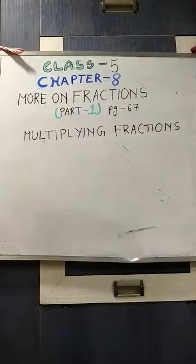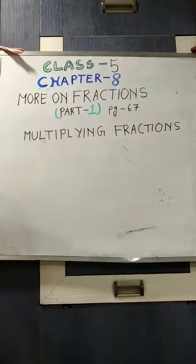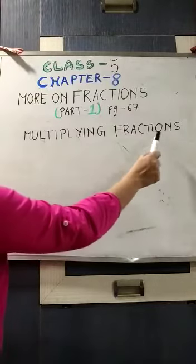Hello students. Today we will start Chapter 8: More on Fractions, Part 1, page 67 of our Junior Maths Book 5. So take out your Junior Maths Book 5 and open to page 67. Today we will start with multiplying fractions.